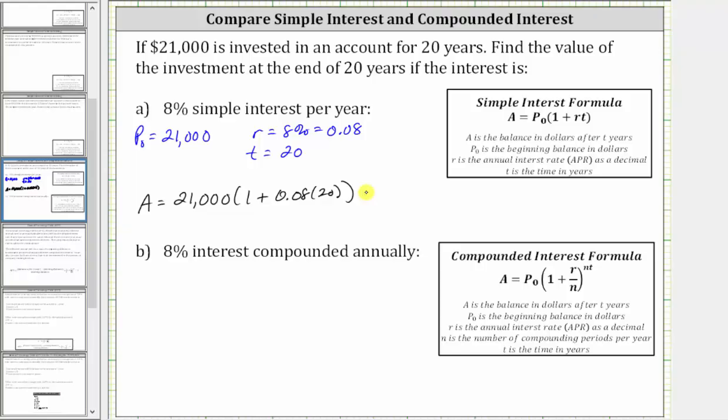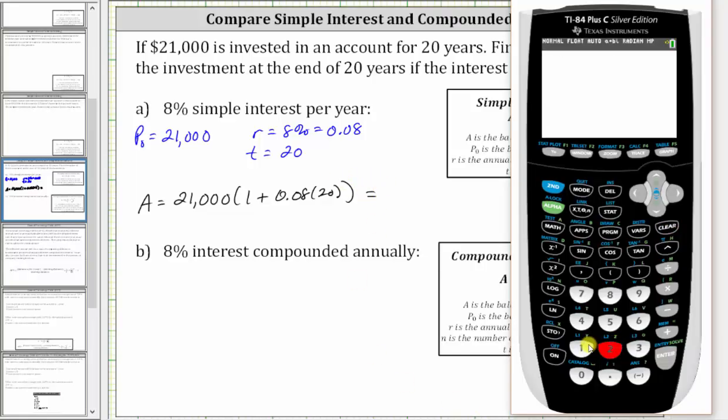Now let's evaluate this on the calculator. We have 21,000 times the quantity one plus 0.08 times 20. And enter, the balance will be exactly $54,600.